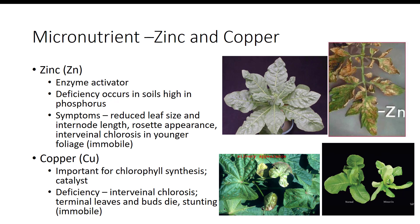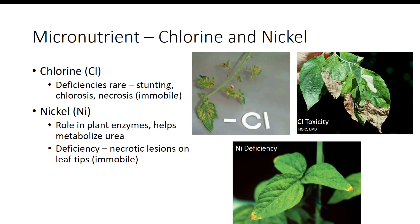Copper is important for chlorophyll synthesis and acts as a catalyst for a variety of enzymatic reactions. Younger leaves show interveinal chlorosis, terminal leaves and buds die, resulting in stunting of the plant. Although deficiency symptoms are typically rare, the visual effects of chlorine are stunting, chlorosis, and some necrosis. Typically, there are excessive amounts of chlorine which cause more problems than a deficiency. Nickel is a component of some plant enzymes, most notably urease, which metabolizes urea nitrogen into usable ammonia within the plant. Without nickel, toxic levels of urea can accumulate within the tissue forming necrotic lesions on the leaf tips.